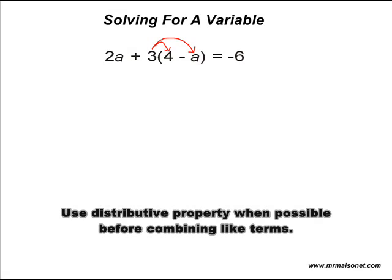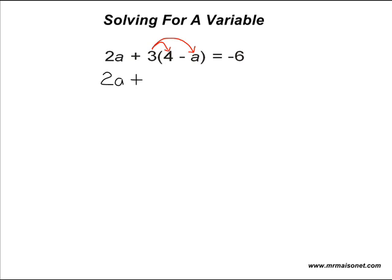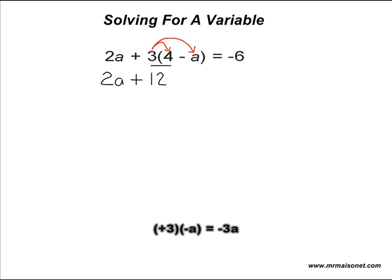The first thing we're going to do is distribute the number 3 to every term inside the parentheses. We take positive 3 times positive 4, which gives us positive 12. Then we multiply positive 3 times negative 1a, which gives us a product of negative 3a. Now we have the equation 2a plus 12 minus 3a is equal to negative 6. We combine like terms: 2a and negative 3a gives us negative 1a.